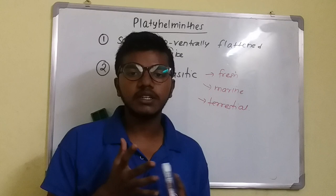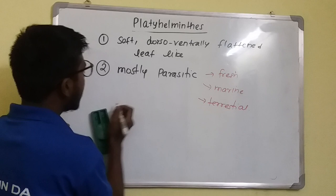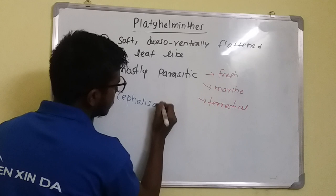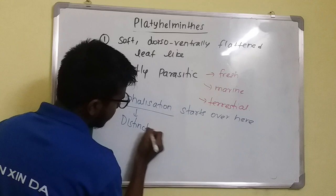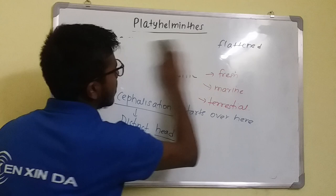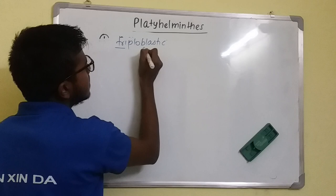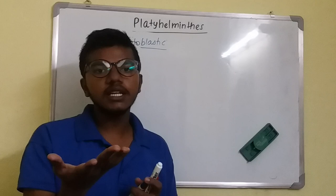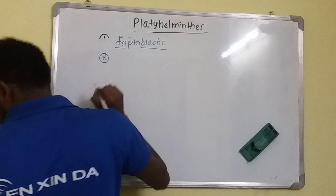In the previous classes like Porifera, we noticed they do not have a distinct head, but in this phylum they do have a distinct head — this is known as cephalization, which starts here. They are also triploblastic animals, meaning they have three germ layers starting from Coelenterata: the outermost is ectoderm, the middle is mesoderm, and the inner is endoderm.